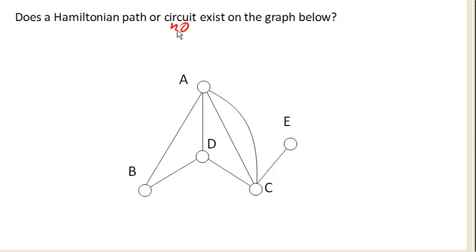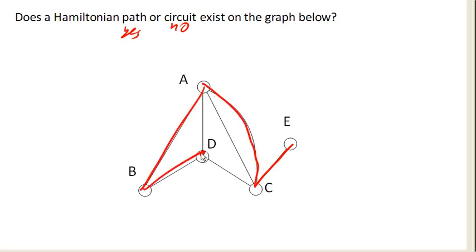Now a Hamiltonian path visits every vertex exactly once but doesn't have to return to the same starting point. And yes, we do have a Hamiltonian path here. We could go this way, this way, this way, this way — and now I have visited every vertex exactly once. So this is a Hamiltonian path. Most of the time we're going to be interested in Hamiltonian circuits, not Hamiltonian paths, but this graph has one nonetheless.